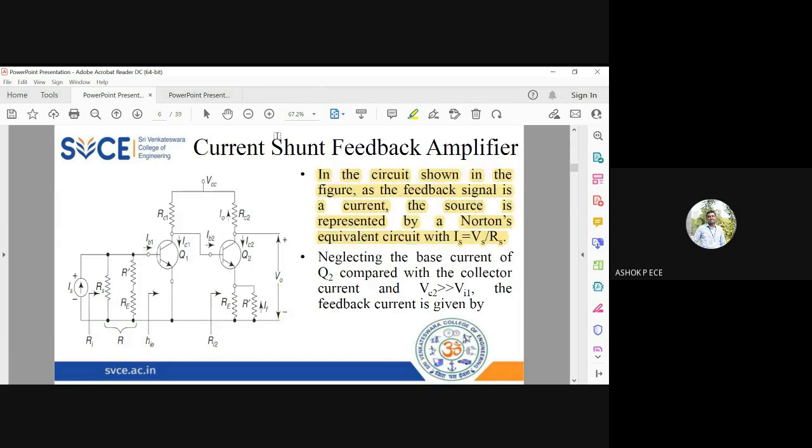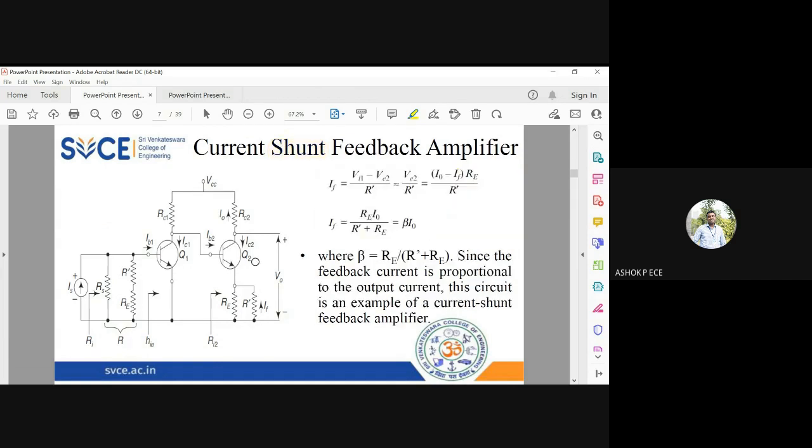And input side I have to represent my Norton circuit because I have this term shunt in my feedback amplifier terminology. And see, the total current is I naught and I want to measure IF, so definitely you have to apply current division. So IF equal to total current I naught into opposite resistance is RE divided by R dash plus RE.